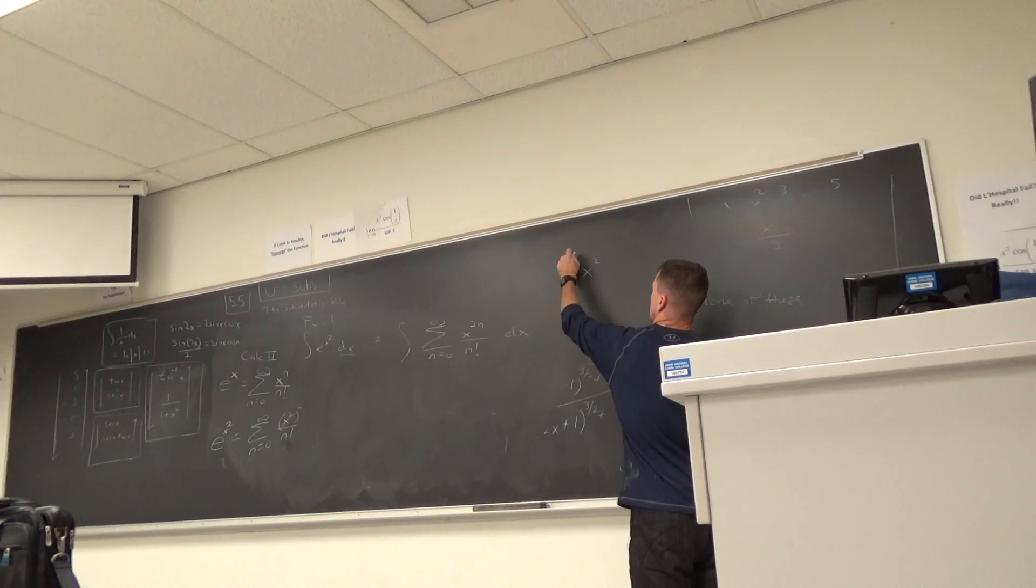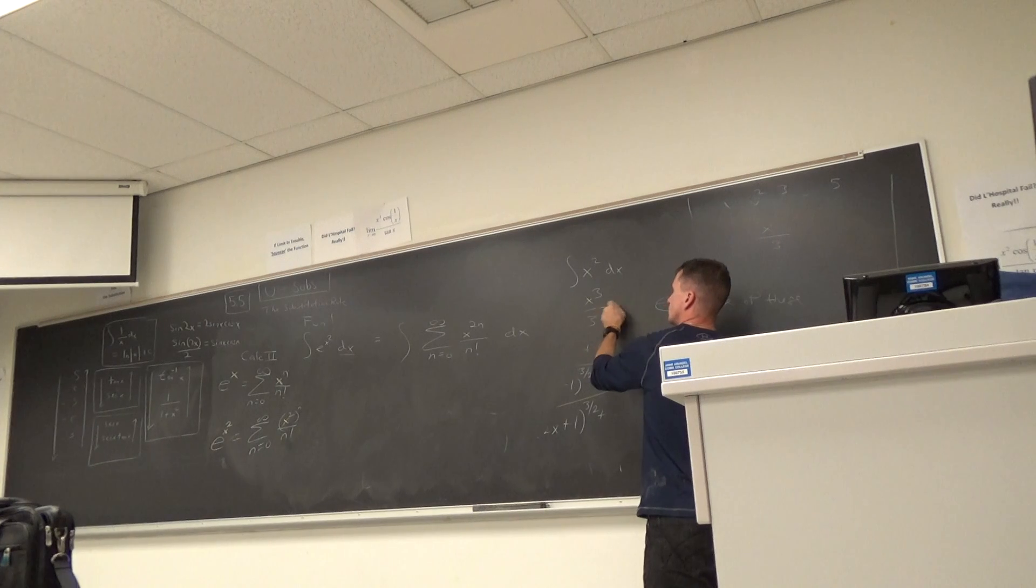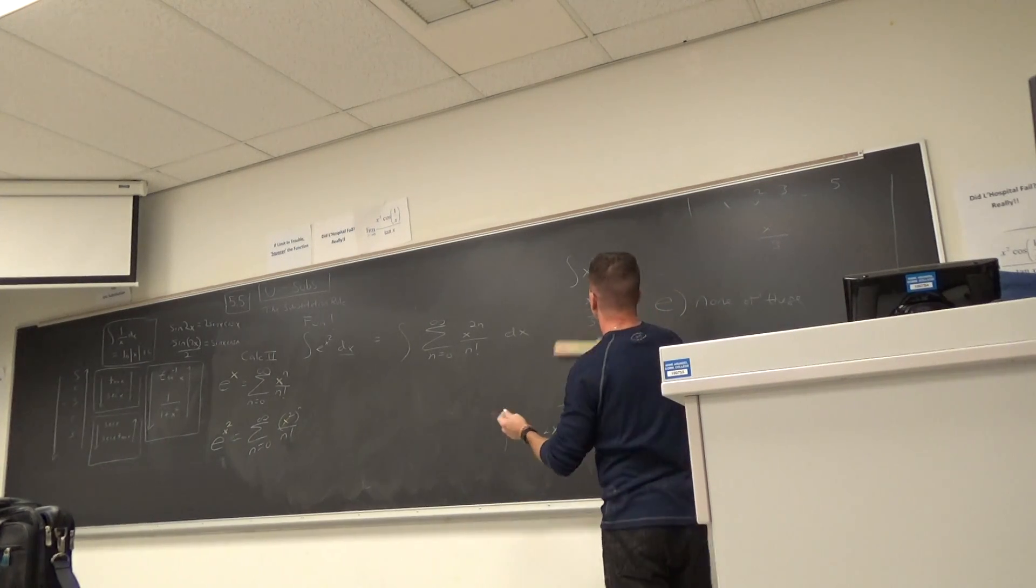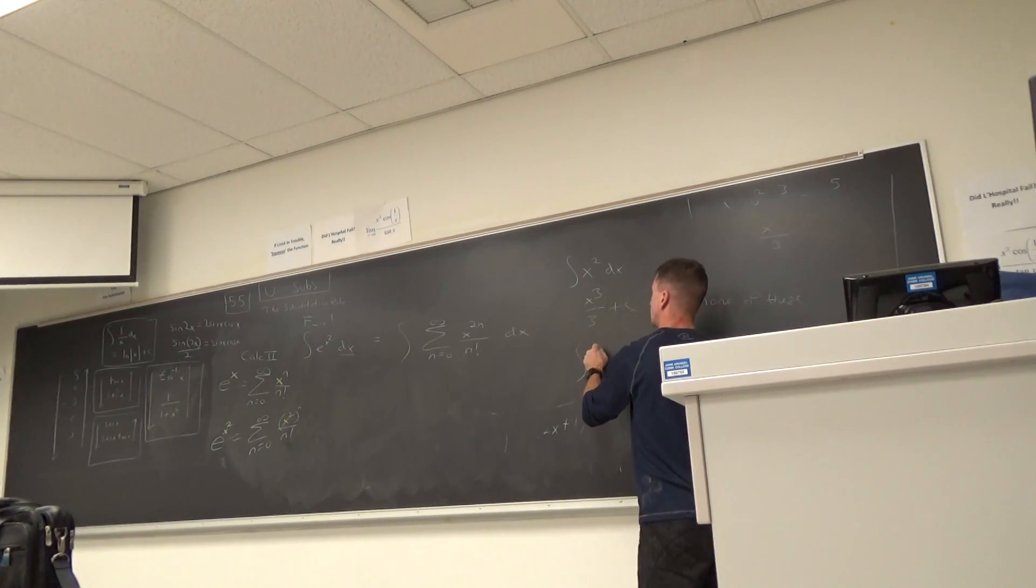So x squared, that's x cubed over three. Cool, let me do another one. x to the fourth, that would be x to the fifth over five?